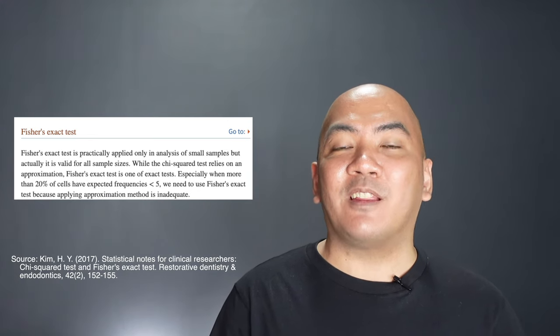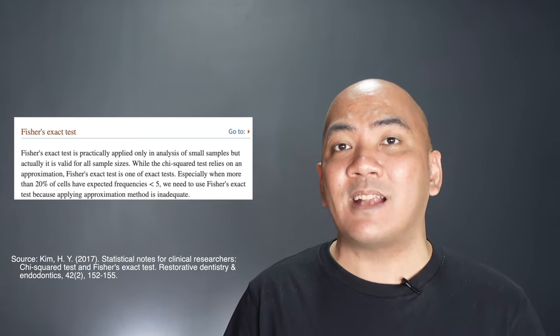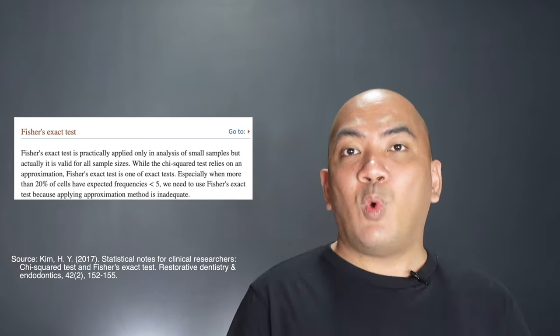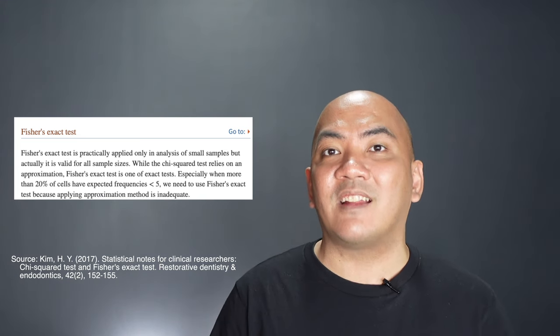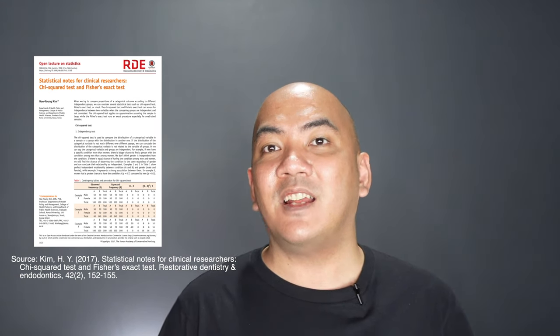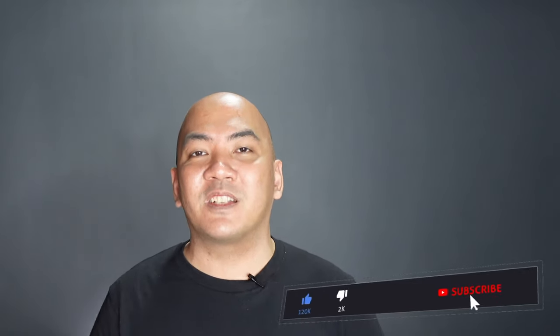Although many claim Fisher's exact test should only be applied to small sample sizes, it is valid for any sample size. While chi-square tests rely on approximation, the Fisher's exact test is better since it is an exact test — see Kim (2017) for details via the link in the description. Thus, if you are associating two categorical variables, you may always use Fisher's exact test without worrying about expected counts less than 5. I hope you learned about the tests of independence through this video. Please like, subscribe, and hit the bell button for more videos.